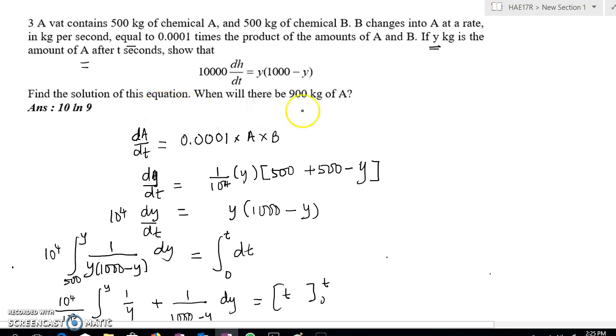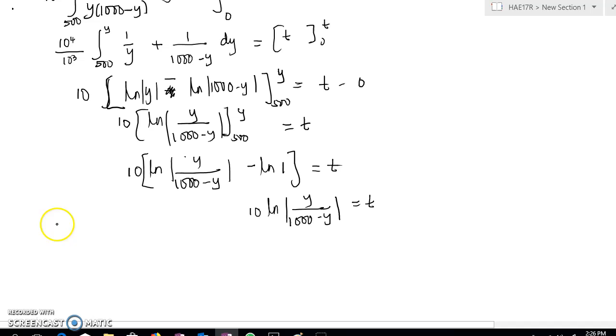The next part of the question is when will there be 900 kg? So that means 900 kg A. So when Y equals to 900 kg, you will notice that your t becomes this: 10 ln. This one will become 100.